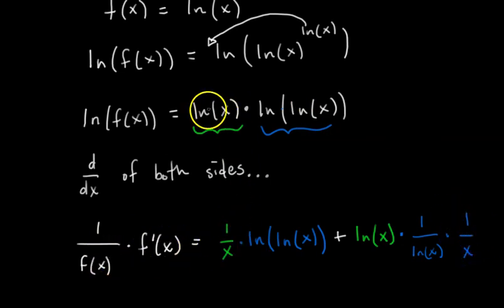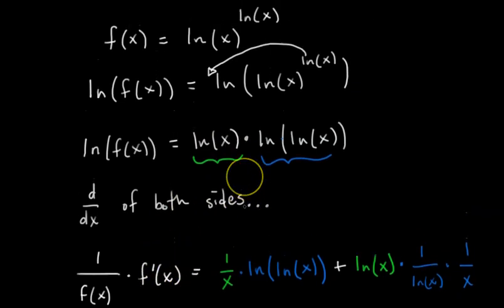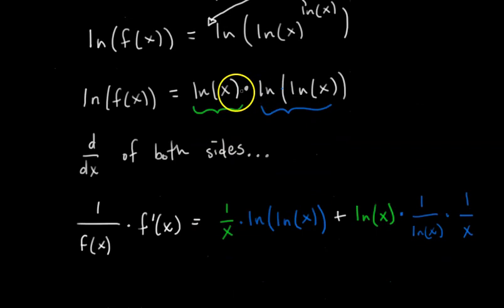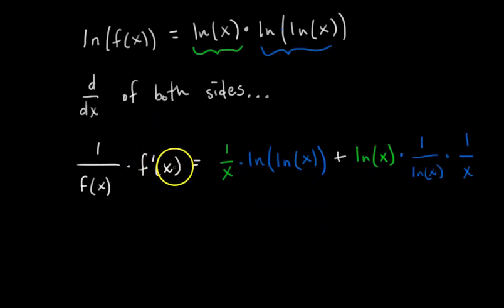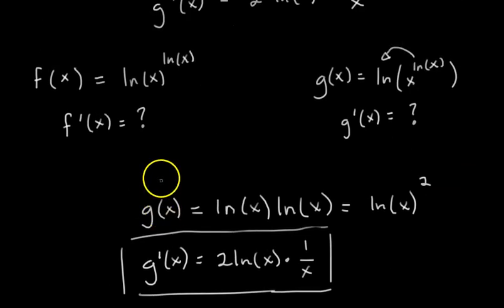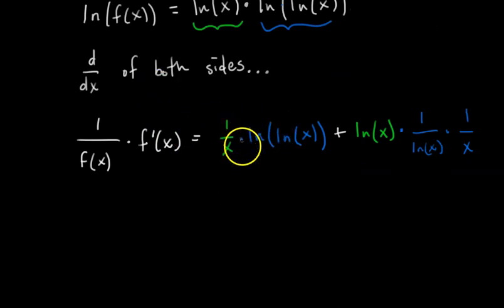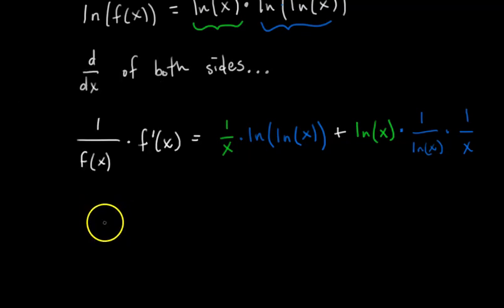I've written out the full derivative of the right side of the equation, color coded. But that's not the final answer, because remember, we're trying to find f prime of x. What we just found was the derivative of ln of f of x, which isn't the same thing as f prime of x. So we want to isolate f prime of x. The clever part of logarithmic differentiation is that the last step is to multiply both sides by f of x — and we actually know what f of x is, it's the original function.